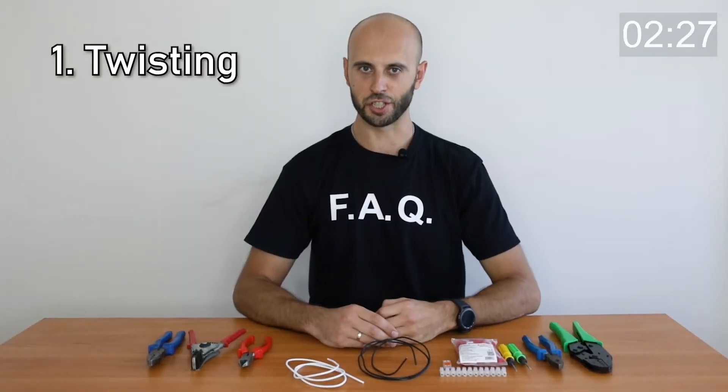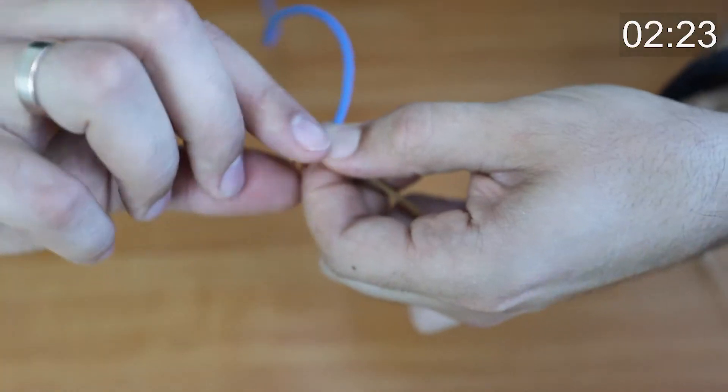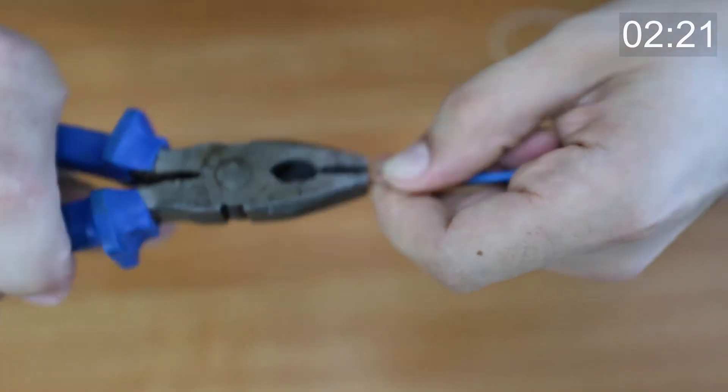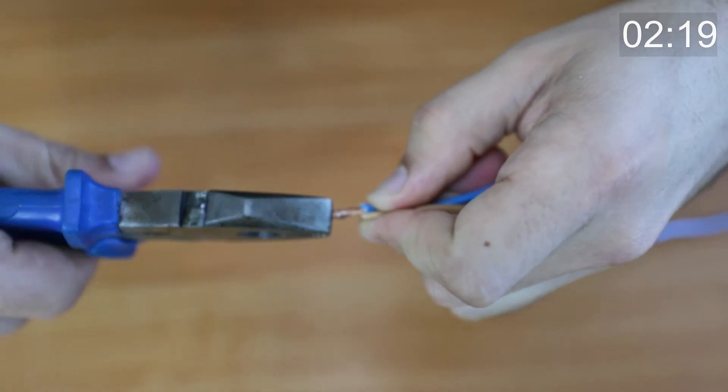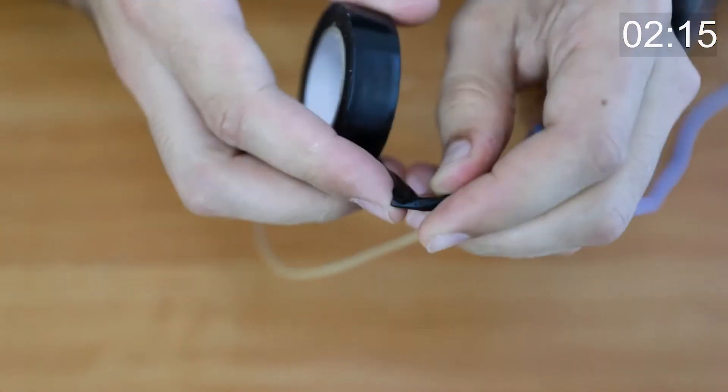The most popular method is twisting. Strip the wires, fluff them slightly, connect and twist. Squeeze it tightly with pliers to avoid burnout, short circuit, and fire. Cut out the teeth and isolate it in layers with a fold.